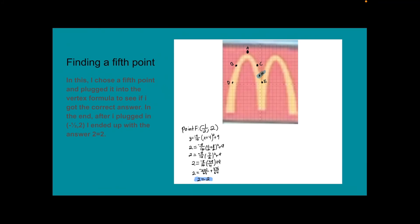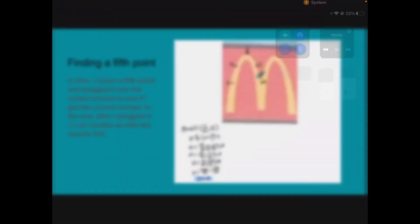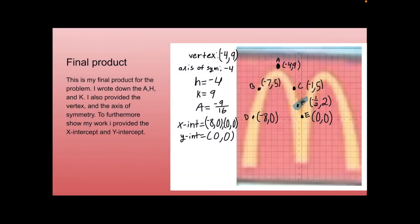Okay, so with trying to find my fifth point, I plugged in the point I chose into the vertex formula to see if I got the correct formula. In the end, after I plugged in negative 1 half and 2, I ended up with the answer equaling 2. 2 equals 2, which means I got the correct answer. And it works with this equation. And this is my final product.